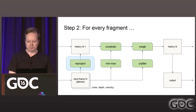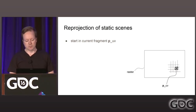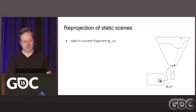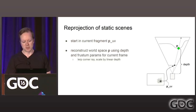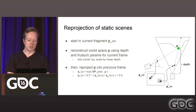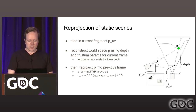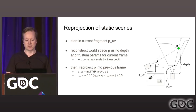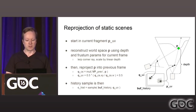Let me go into reprojection first. We have some fragment in our fullscreen post pass starting at texture coordinate P_UV. If we look at it on the boundary of the view frustum, we can sample the depth buffer and reconstruct the world space position by interpolating a corner ray and scaling by the linear depth. Once we have the world space position, we can reproject it into the previous frame using the previous frame's model-view matrix. We obtain normalized device coordinates, transform those into texture space, and obtain Q_UV — which we use to look up in our history buffer. Reprojection is now complete.